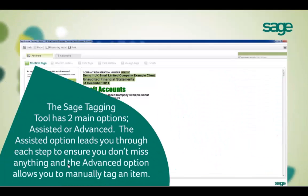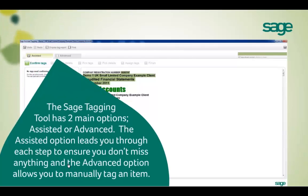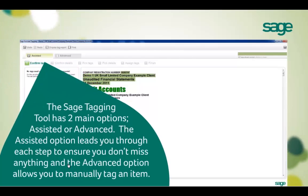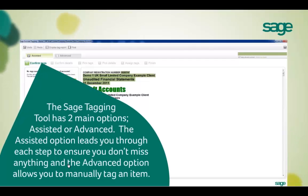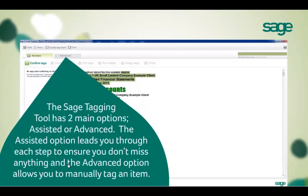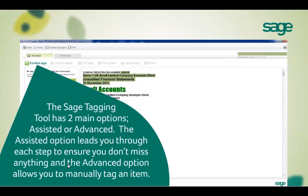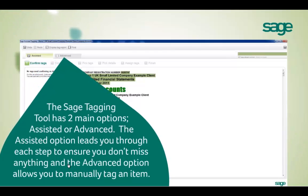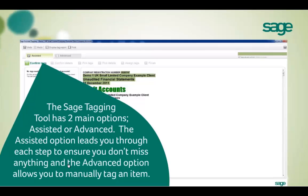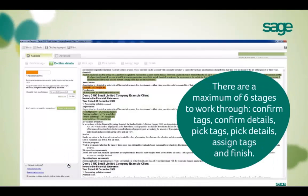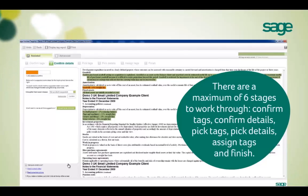We give you two main tagging options: assisted or advanced. The assisted option does as much work for you as possible, and the advanced option allows you to tag everything manually. There are only six stages in our assisted tagging tool, which you can see along the top.